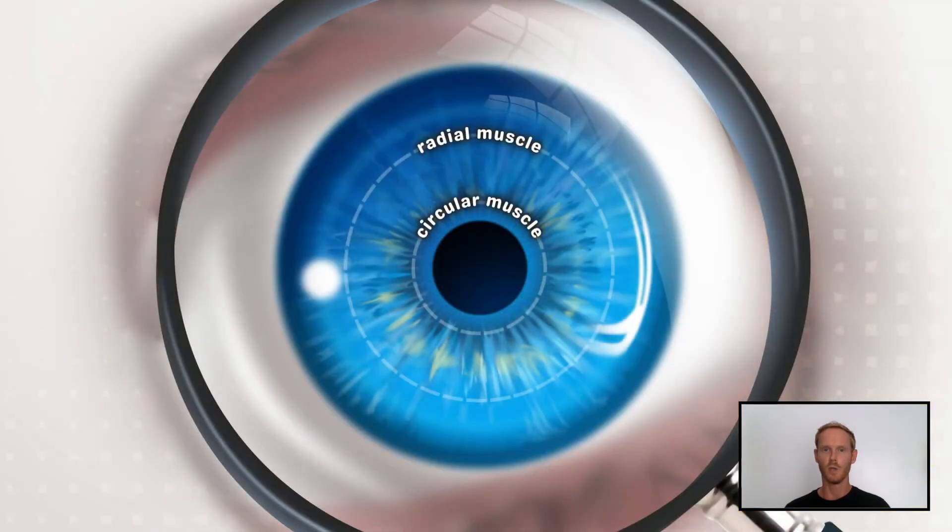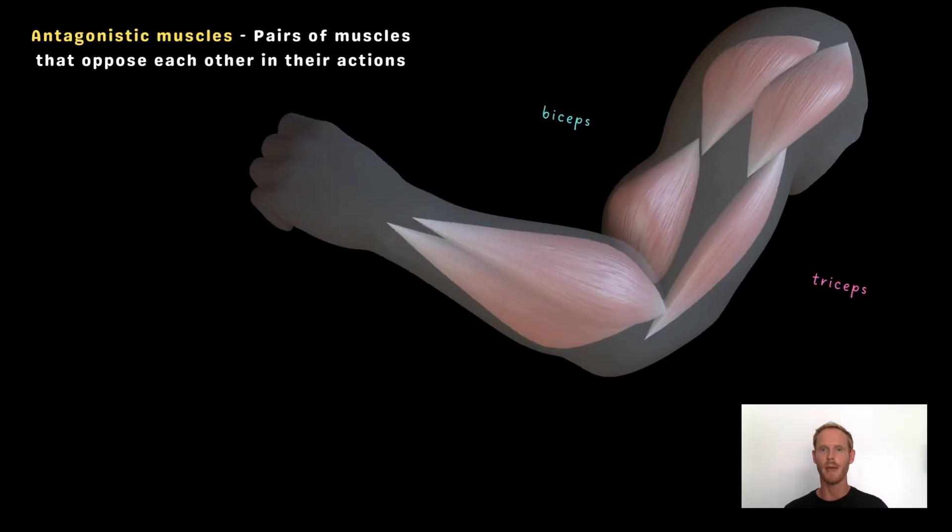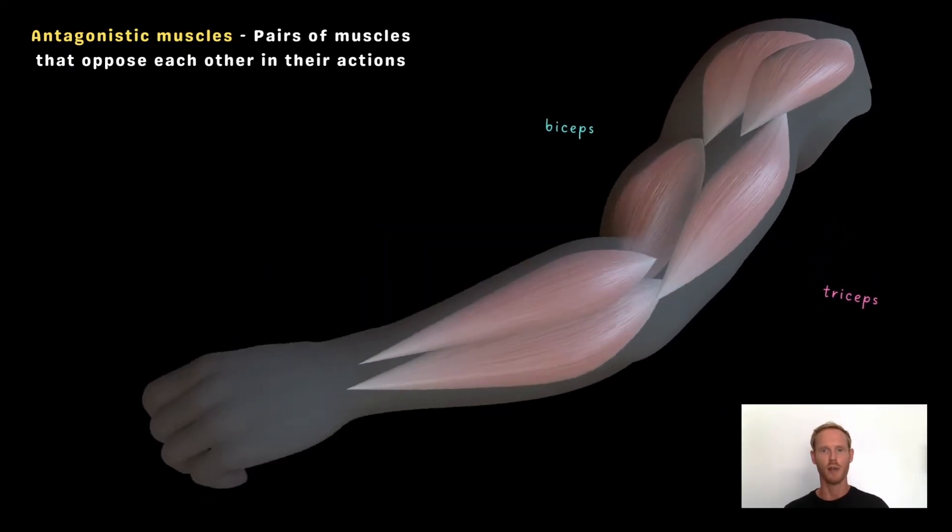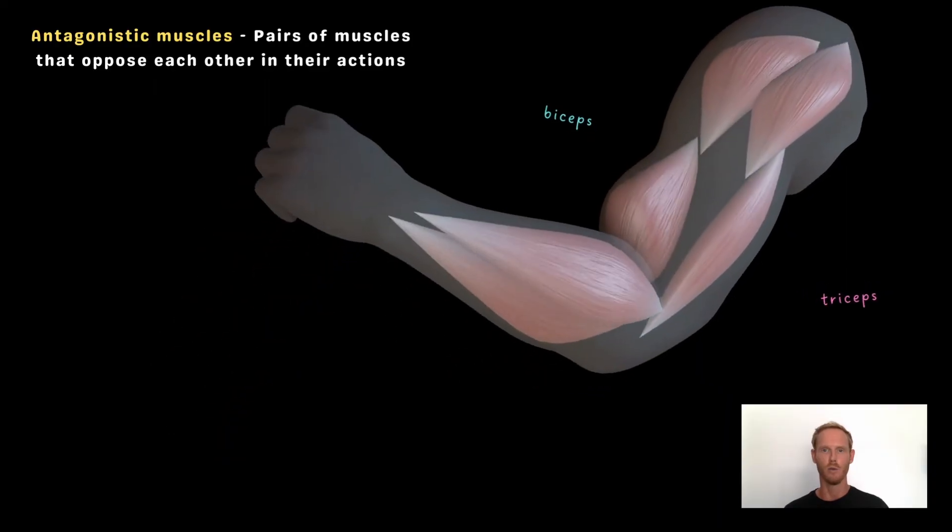The diameter of the pupil is altered by the actions of the antagonistic muscles in the iris, which are the circular muscles and the radial muscles. Antagonistic muscles are pairs of muscles that oppose each other in their actions. As one muscle contracts, the other relaxes to allow the movement to occur.